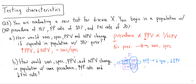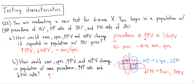When the false negative rate goes down, this is associated with an increase in sensitivity and an increase in NPV. For sensitivity, it's the probability of getting a positive test result given you had the disease, and for NPV, it's the probability of not having the disease given you had a negative test result. So if false negatives go down, our denominator goes down and the value goes up. In this case, sensitivity goes up, specificity goes down, PPV goes down, and NPV goes up.